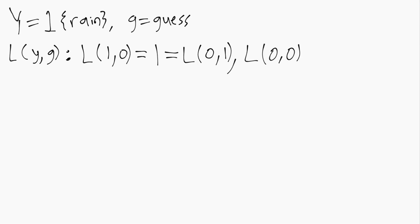If it does not rain and that is what you guessed, then you're correct and you win a dollar. Remember, winning is the same as negative losing, so we can write this as a loss of negative one. Similarly, if it does rain and that's what you guessed, you win a dollar — in other words, you lose negative one dollar. So losing negative dollars is a good thing.